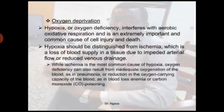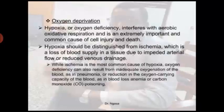Starting with oxygen deprivation: hypoxia, or oxygen deficiency, tends to interfere with aerobic oxidative respiration and is an extremely important and common cause of cell injury and cell death. When the cell is deprived of oxygen, its normal aerobic respiration is impaired, which can lead to cell injury. Hypoxia should be distinguished from ischemia, which is a loss of blood supply to tissue due to impeded arterial flow or reduced venous drainage. Oxygen deficiency can also result from inadequate oxygenation of the blood, as in pneumonia, or from reduction in the oxygen-carrying capacity of the blood, as in anemia or carbon monoxide poisoning.